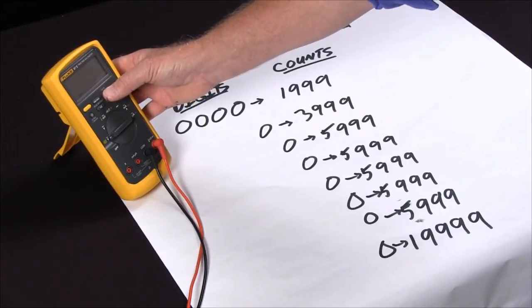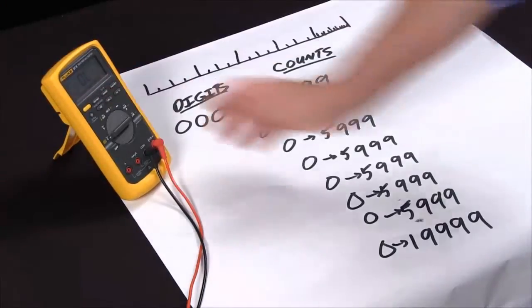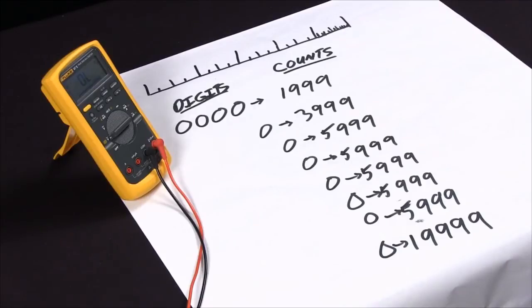If I force it into its lowest range, in this case, which is the 6 millivolt range, we see OL on the display. Never take OL to mean that that's an open line. That means overload. There's more voltage on there than the range can measure.